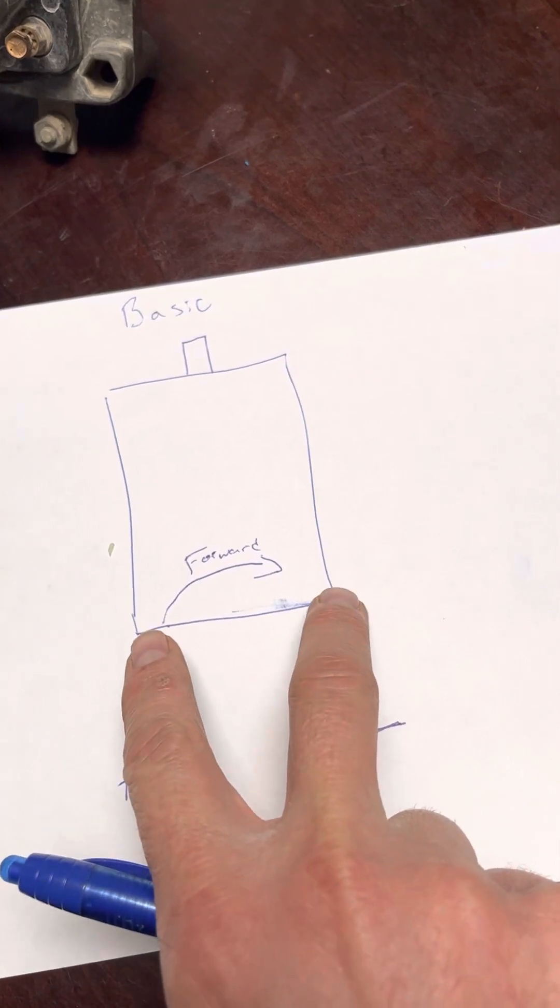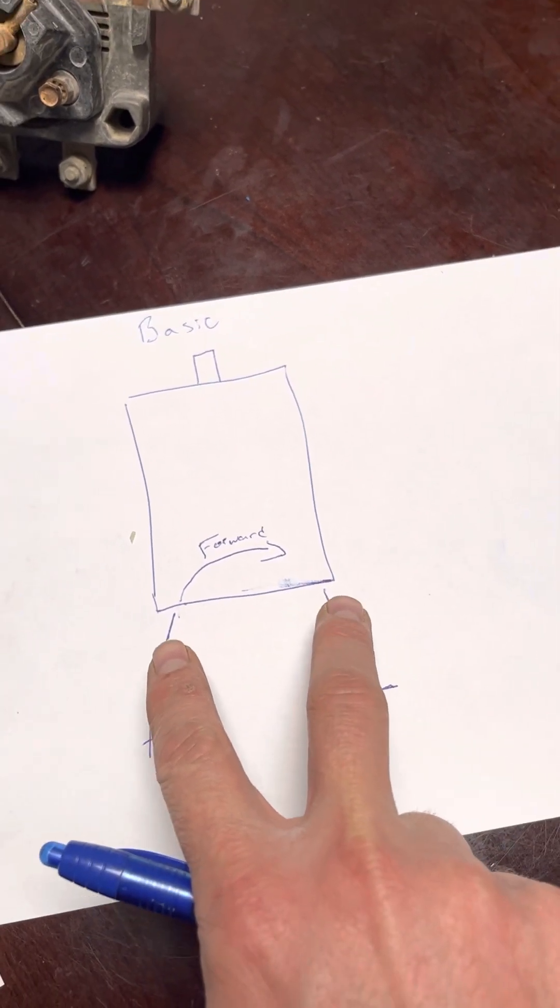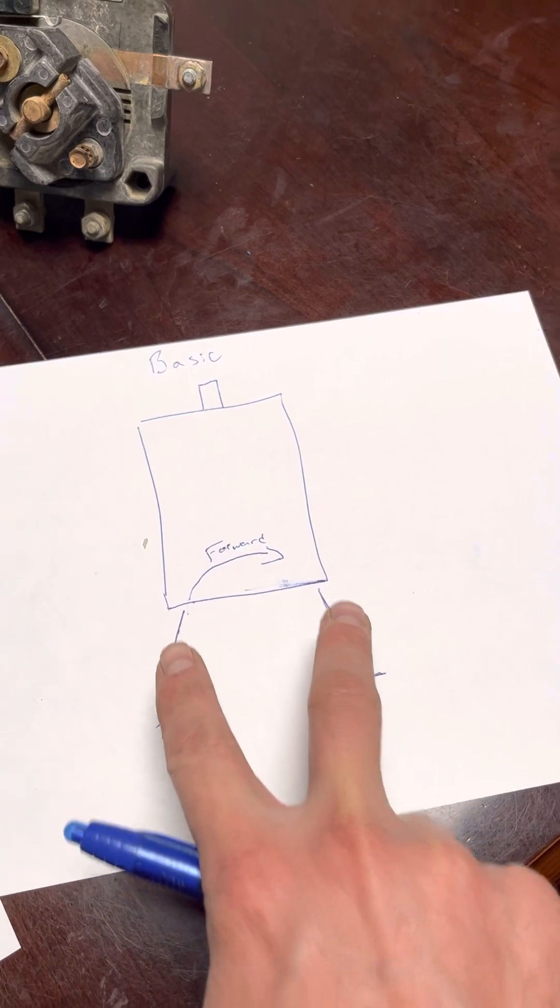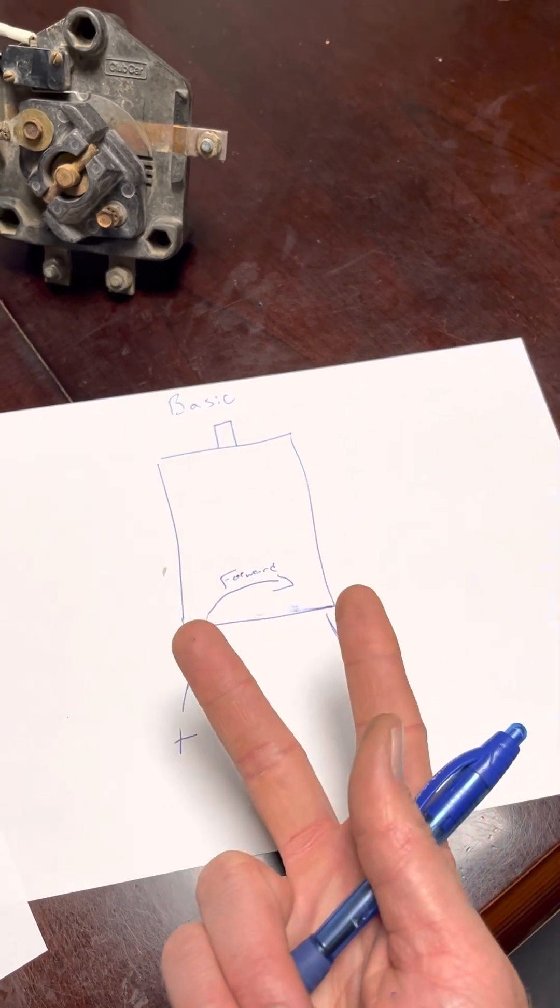So this would be our traditional looking motor, a DC motor. To switch the direction of the motor, you typically only have two poles and you switch the polarity of it, negative, positive, and it spins the other way.